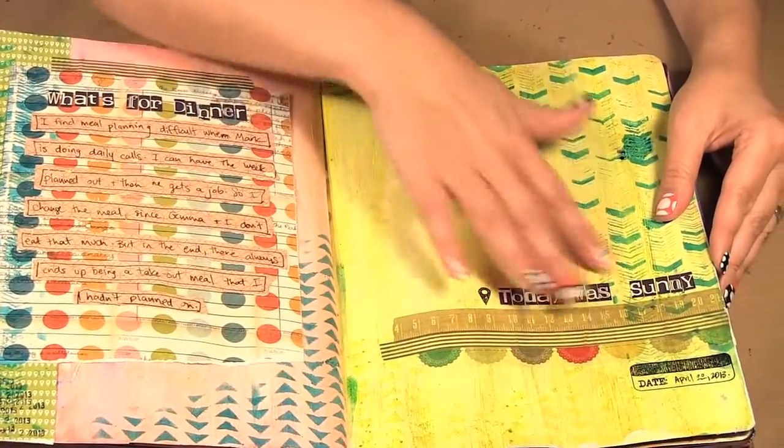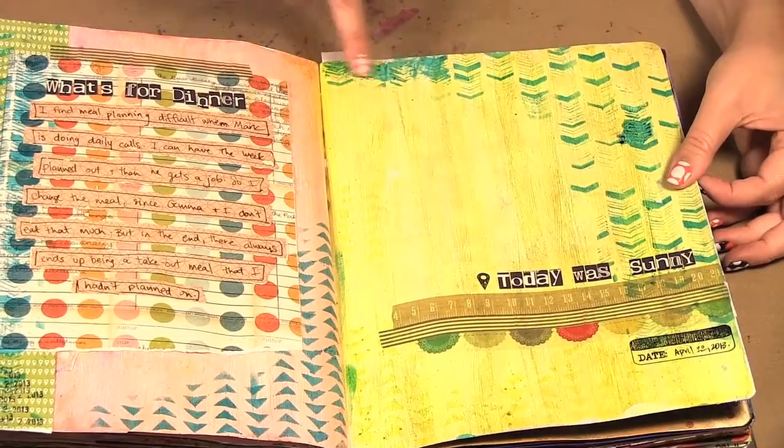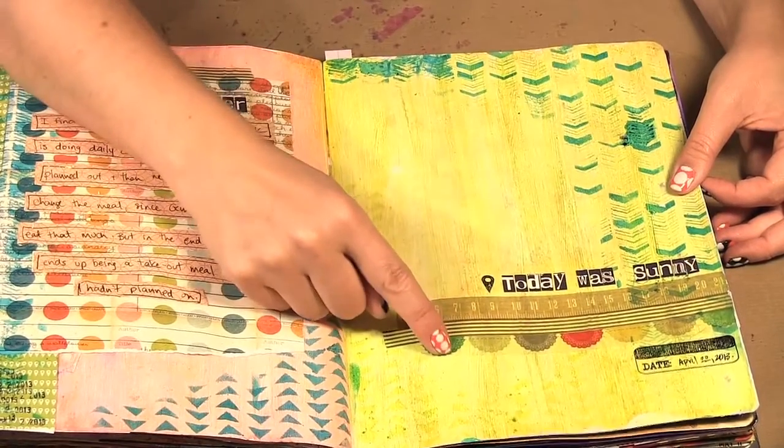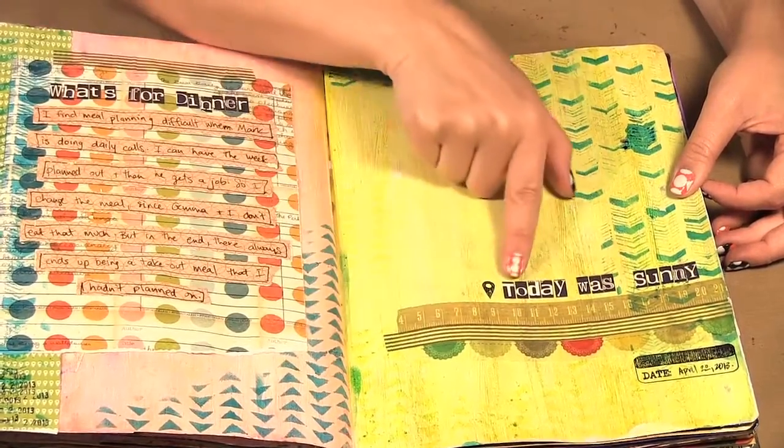Then on this page again the background was done in the sprays. I stenciled on some of the designs and this is some more of that tape and some more of the letters.